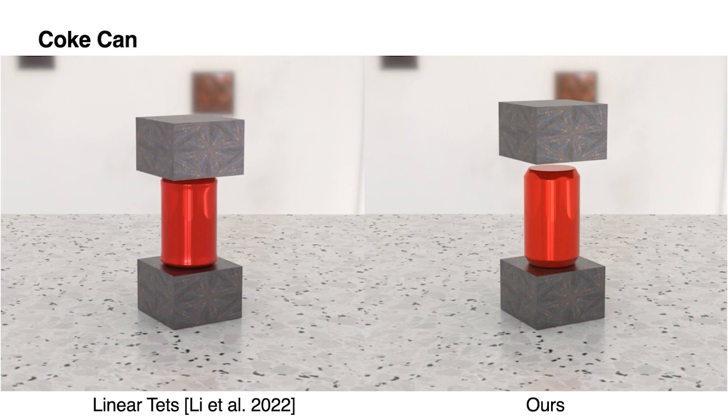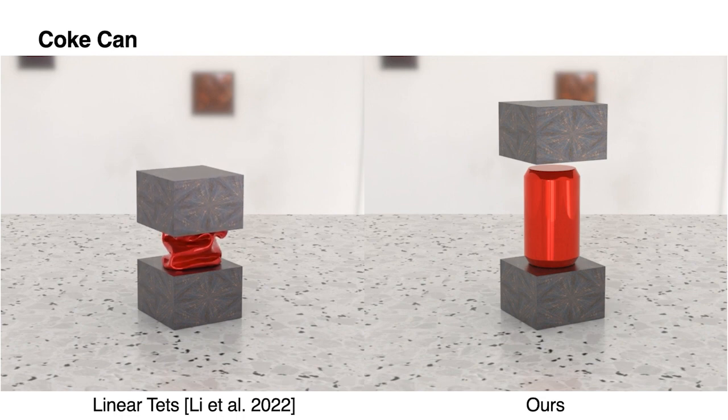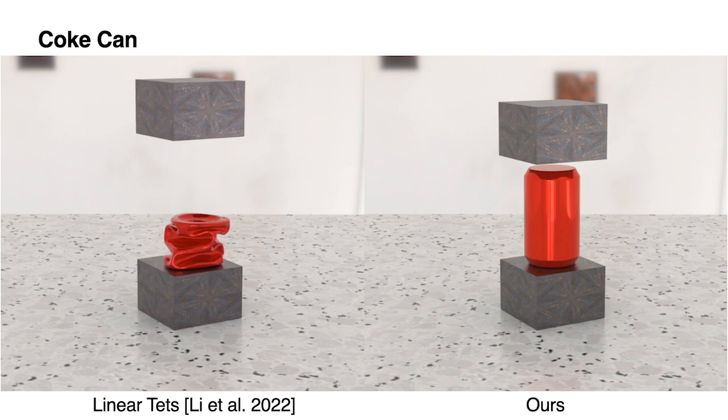Here we compress a coke can. Using real-world aluminum parameters, while linear tetrahedral FEM suffers from severe shear locking issues, our method can generate sharp wrinkles and buckling effects.